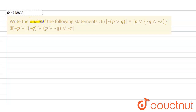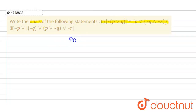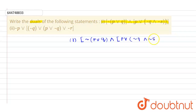Write the dual of the following statements. This is our first statement: negation of p or q, and negation of p, or in bracket negation of q and negation of s. In this question we need to find the dual of this statement. Our first statement is: bracket negation of bracket p or q, and bracket p and in bracket negation of q and negation of s.